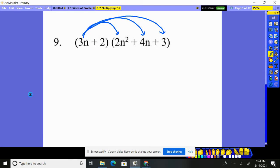So 3n times 2n squared: three times two gives me six, and n times n squared is n cubed. Now 3n times 4n: three times four is twelve, n times n is n squared. And finally, 3n times three is 9n.